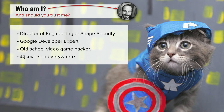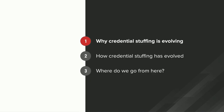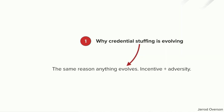You can find me at JSOverson just about everywhere if you want more stuff about JavaScript, attack tools, credential stuffing, some video games, and of course American politics. We're going to be going over why credential stuffing is evolving in the first place, then how it is evolving, and then what is next on the horizon. Credential stuffing is evolving for the same reason that anything evolves: there is incentive and there is adversity.